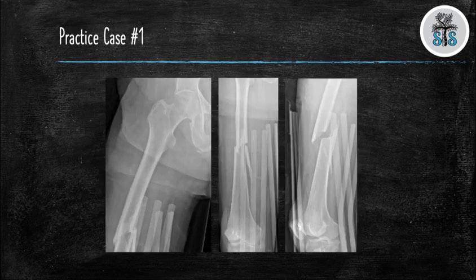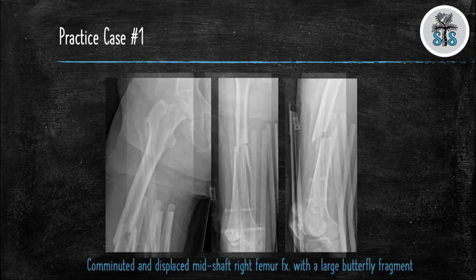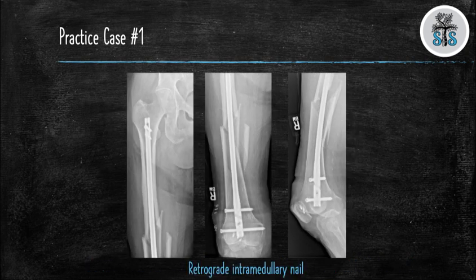Time for the first case. How would you read these x-rays? We have three views of a right femur demonstrating a comminuted displaced mid-shaft femur fracture with a large butterfly fragment. This injury was treated with a retrograde intramedullary nail.